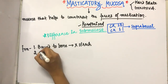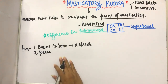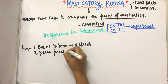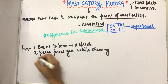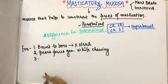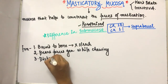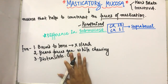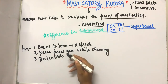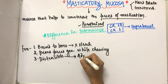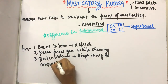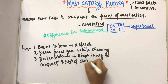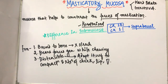The second function is that it bears the forces which are generated while chewing — it bears the forces of mastication. Third, it is distensible, and it adapts itself to the contraction and relaxation of the cheeks, lips, and tongue.